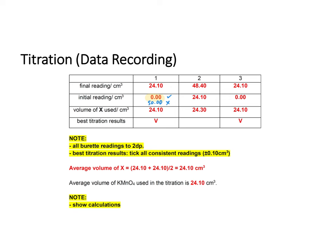Best titration results must consist of more than one reading — there should never be only one tick in your titration table. Best results means two or more readings that are consistent with one another, i.e., within 0.1 cm³ of each other. Once you have determined the best titration results, show the calculation for the average volume. In some years the working for the average carries a mark, so even if both readings are identical (e.g., 24.1 + 24.1 ÷ 2), you still have to show the working.